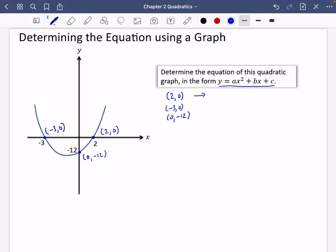In other words, this first one means if x is equal to 2, y is equal to 0. So I'm just going to use these things and I'm going to substitute them into y equals ax squared plus bx plus c to find out what a, b and c are.